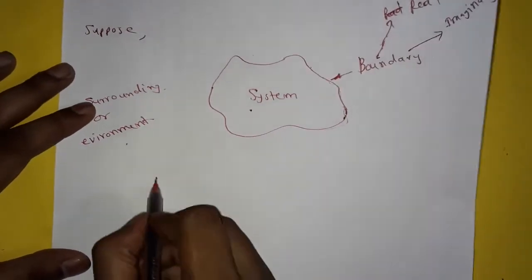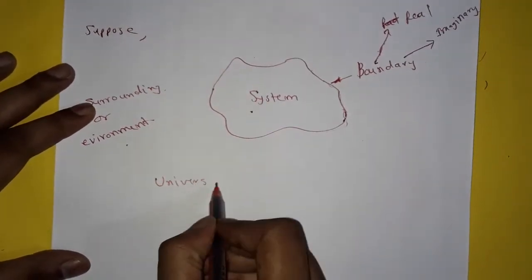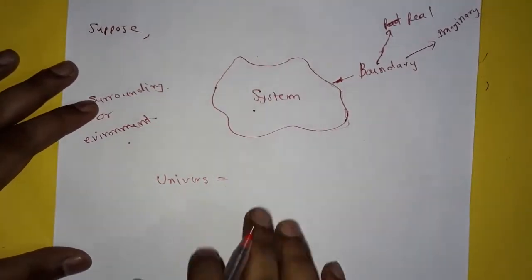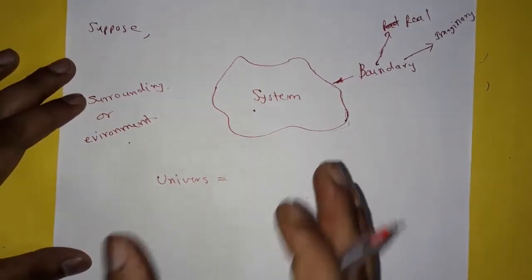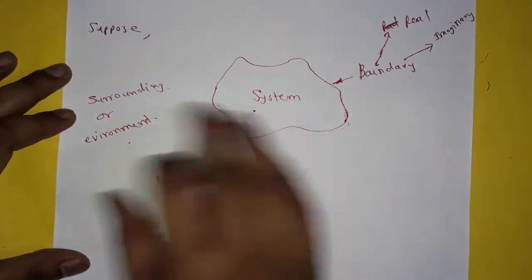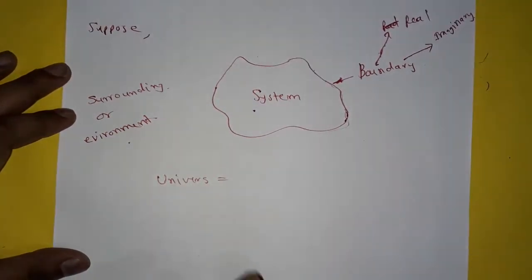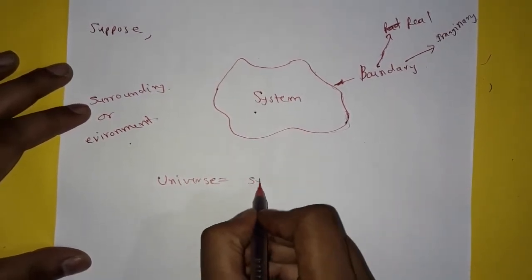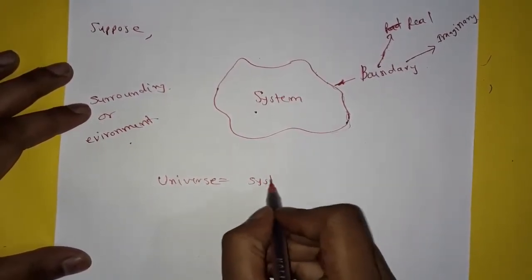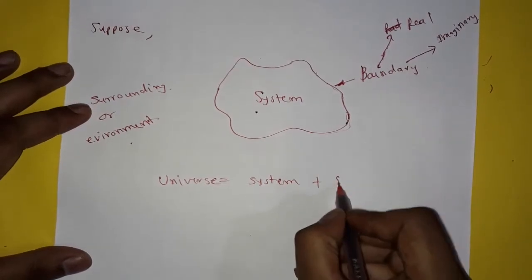Further, what is universe? Universe actually consists of system and surroundings. Both together form universe. Universe is system plus surroundings.